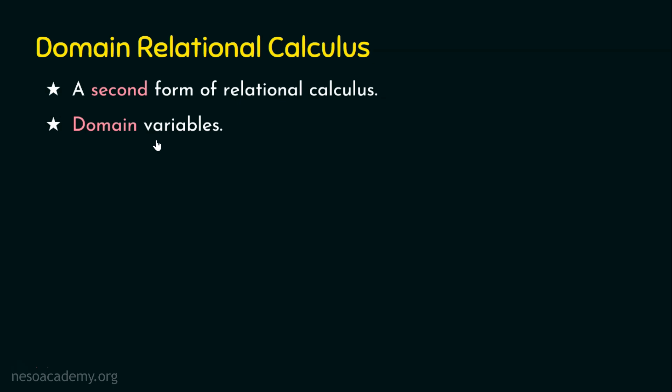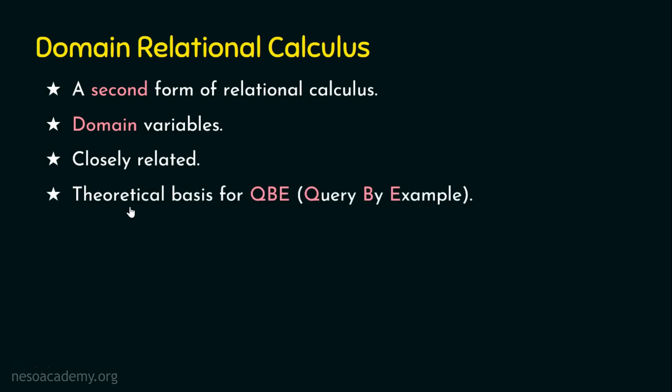Both tuple relational calculus and domain relational calculus are closely related to each other. The only difference is that in tuple relational calculus we use tuple variables for fetching data tuple by tuple — row by row — whereas here we retrieve data attribute by attribute by setting domain variables. Domain relational calculus is the theoretical basis for QBE, that is, query by example.